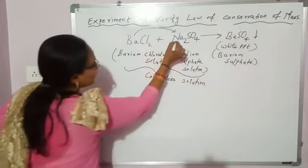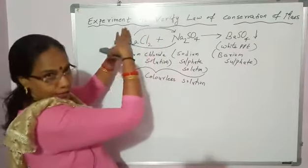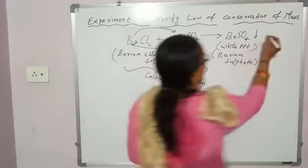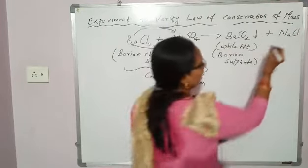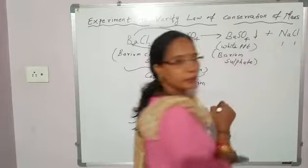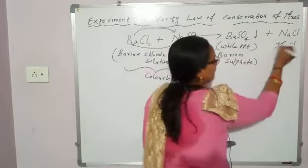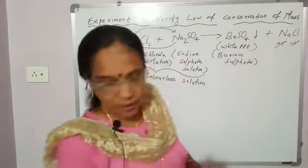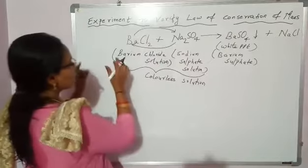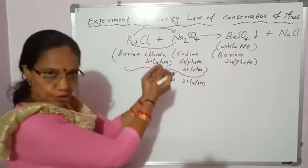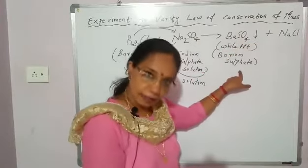Next, sodium will take the place of barium — it will displace barium — forming sodium chloride, NaCl. Sodium has valency 1 and chloride has valency 1. Sodium is a positive ion and chloride is a negative ion; plus 1 and minus 1 cancel, so the formula is NaCl. So when you mix the two colorless solutions, you immediately get a white precipitate of barium sulfate.